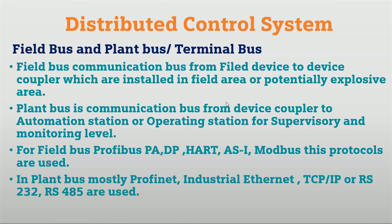Field bus is the communication bus from field devices to the device coupler, installed in the field area or potentially explosive area. Plant bus is the communication bus from the device coupler to the automation station or operating station for supervisory monitoring level. In the field bus, protocols like Profibus PA and DP are used since they can operate in potentially explosive areas. In the plant bus, high-speed communication like Profinet or industrial Ethernet TCP/IP is used. Based on application and environment zone, we select the appropriate communication protocols.